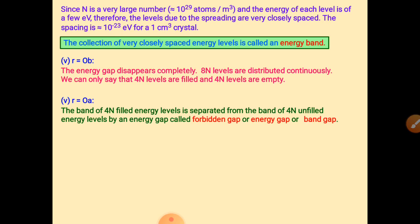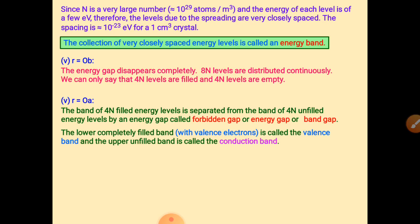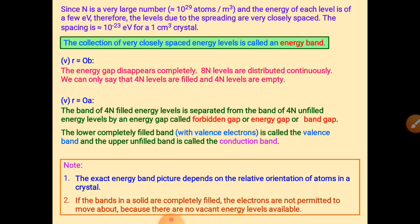The 4n filled energy levels are separated from the 4n unfilled energy levels, and the gap between them is called the forbidden gap — also known as the energy gap or band gap. If this gap increases, more energy must be given to the electron to move from the valence band to the conduction band. The lower, completely filled band is called the valence band, and the upper, unfilled band is the conduction band.